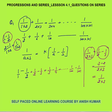The last term 1/(100×101) can be written as 1/100 − 1/101, because taking LCM as 100×101 gives (101−100)/(100×101) = 1/(100×101). So I am just rearranging — it is a different way of writing the same thing.